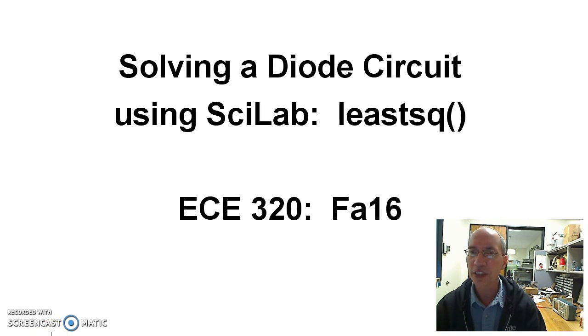I'd like to look at how to solve a nonlinear circuit, specifically a diode circuit, using least squares. Least squares is one way to solve n equations and unknowns in Scilab.